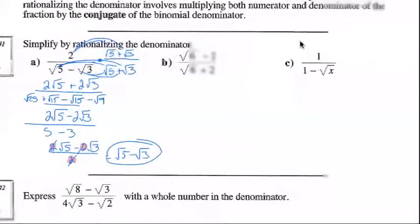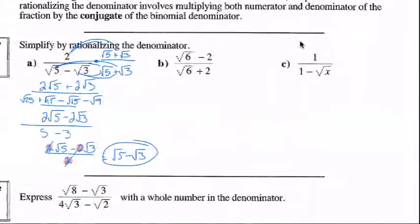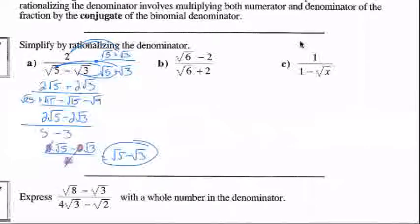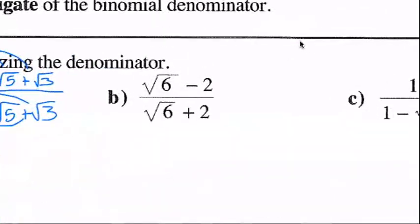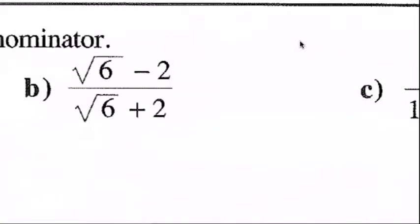Easier said than done, right? Let's look at part b. Square root 6 minus 2, divided by the square root of 6 plus 2.